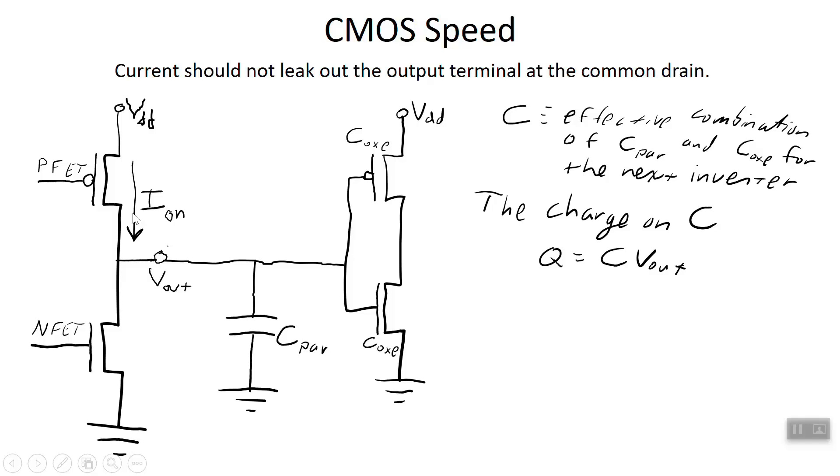How is the capacitance related to this current? The only reason actual current gets to flow through this PFET as it turns on is because these capacitances are available for charging. The time rate of change of this Q is the current that is able to flow through the PFET, which we're calling I on. So this current I sub on is C times DV out by DT, the time rate of change of that, which I'm going to instead write as delta V over delta T.